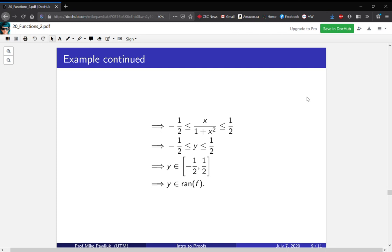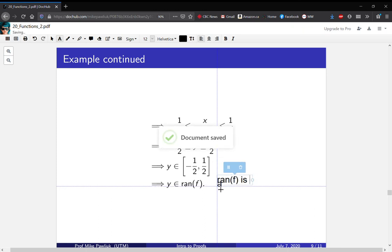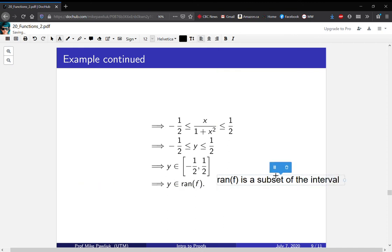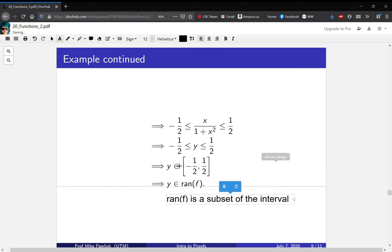All right. Actually, here what we just showed was that the range is a subset. So what we just showed is that ran(f) ⊆ [-1/2, 1/2].